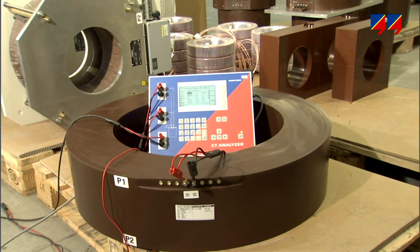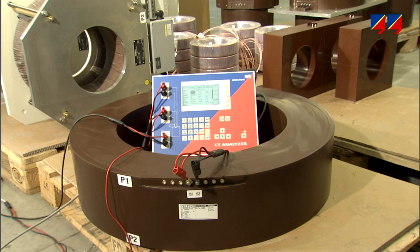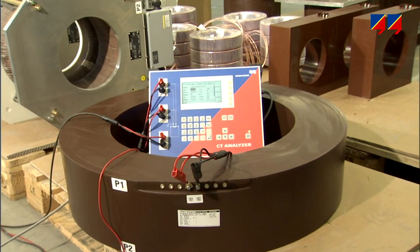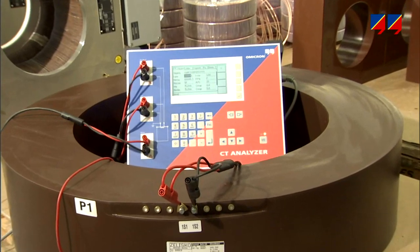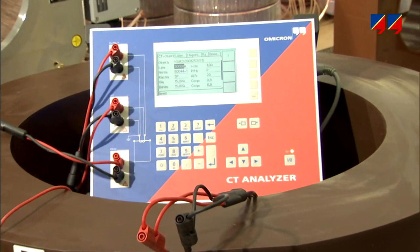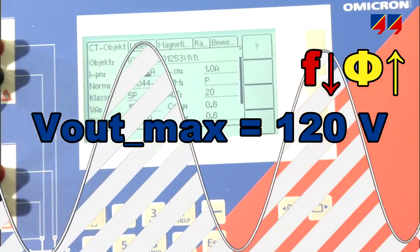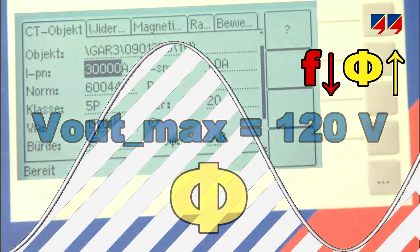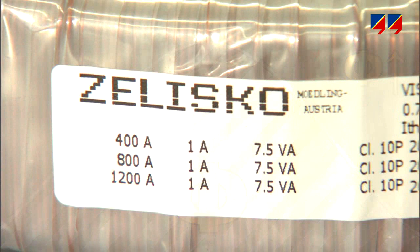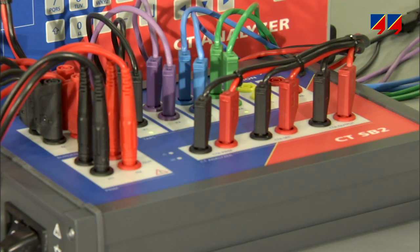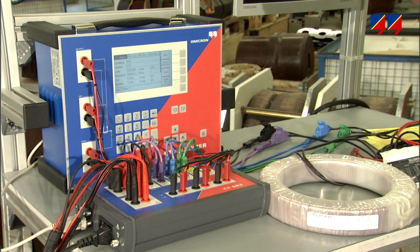CT analyzer provides an automatic pass or fail assessment. For special CTs, such as those with very high turns ratio or with a very high knee point voltage, CT analyzer's principle of testing from the secondary side avoids the need for heavy cables, and its low voltage, low frequency method makes excitation curve measurement very safe. For CTs with tapped secondary winding, the CT analyzer switchbox allows the simultaneous connection of the taps and the execution of the test in one automatic procedure.